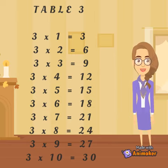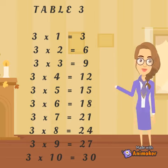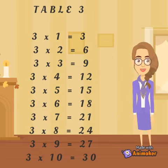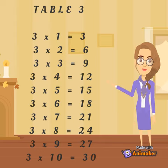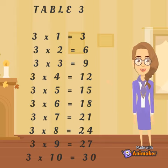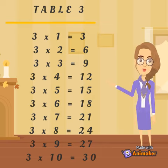3 1s are 3. 3 2s are 6. 3 3s are 9. 3 4s are 12. 3 5s are 15.